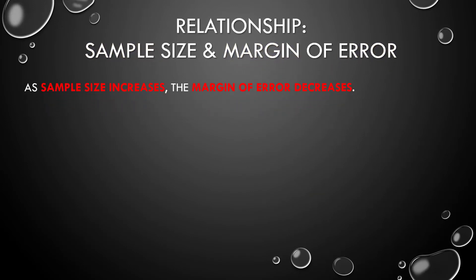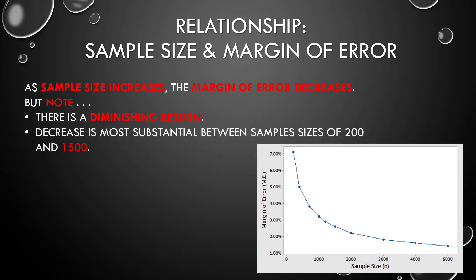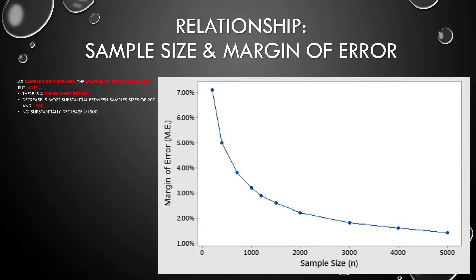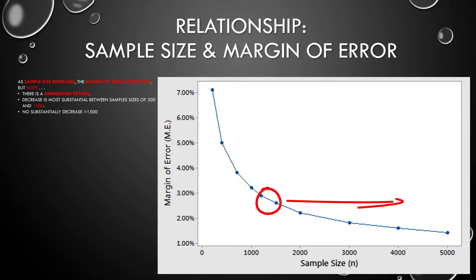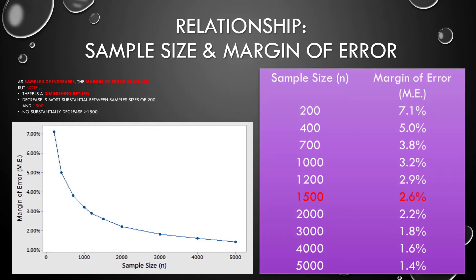As sample size increases, the margin of error decreases. But note there's a diminishing return from taking larger and larger samples. The margin of error decrease is most substantial between sample sizes of 200 to 1,500. The margin of error does not substantially decrease at sample sizes greater than 1,500, since it's already below the 3% mark. On the graph, there's a sharp decline in margin of error as we increase sample size initially, but around the 1,200 to 1,500 mark, the curve begins to flatten. It's generally not worth the additional cost and effort to bring the margin of error below 3%, so around 1,500 is essentially the sweet spot.